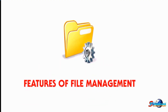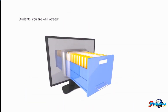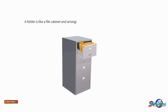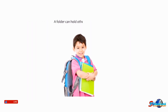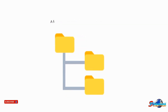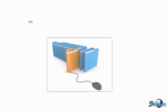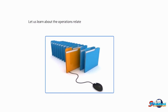Hello students, today we will learn about file management. In a computer, information is stored in a file, and all related files are clubbed inside a folder. A folder is like a file cabinet, and arranging files in it makes it easy to locate them. A folder can hold other folders as well — a folder within a folder is called a sub-folder. You can differentiate a file from a folder with the help of icons associated with them.